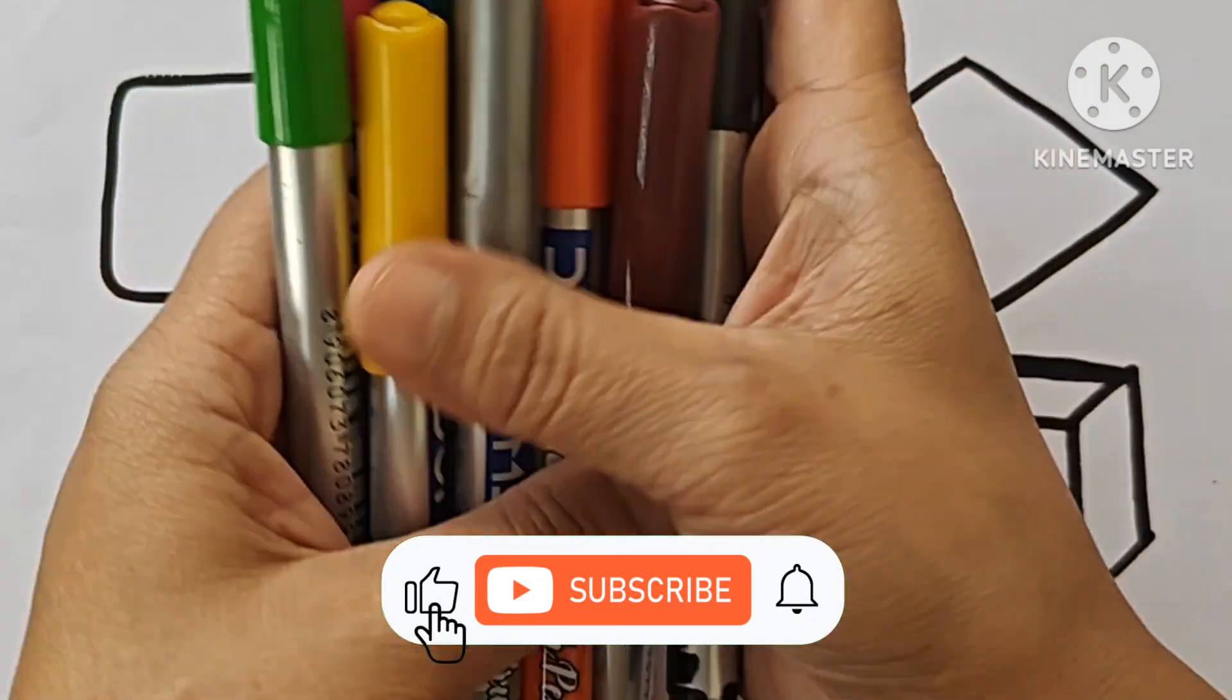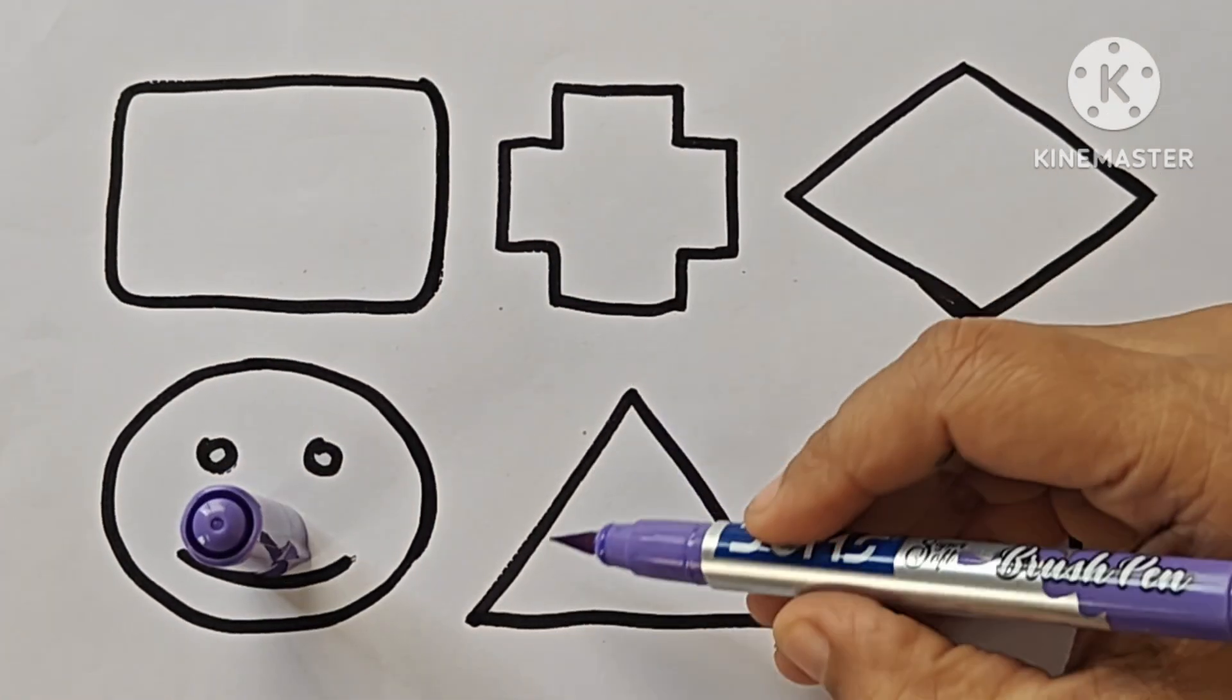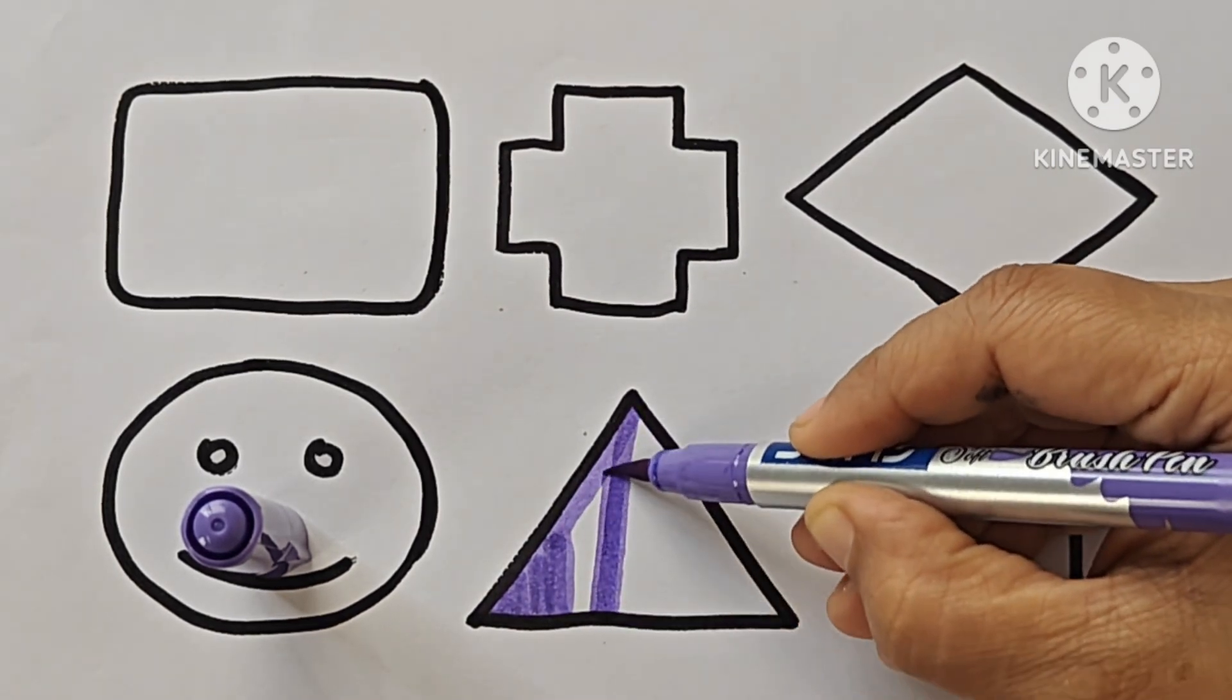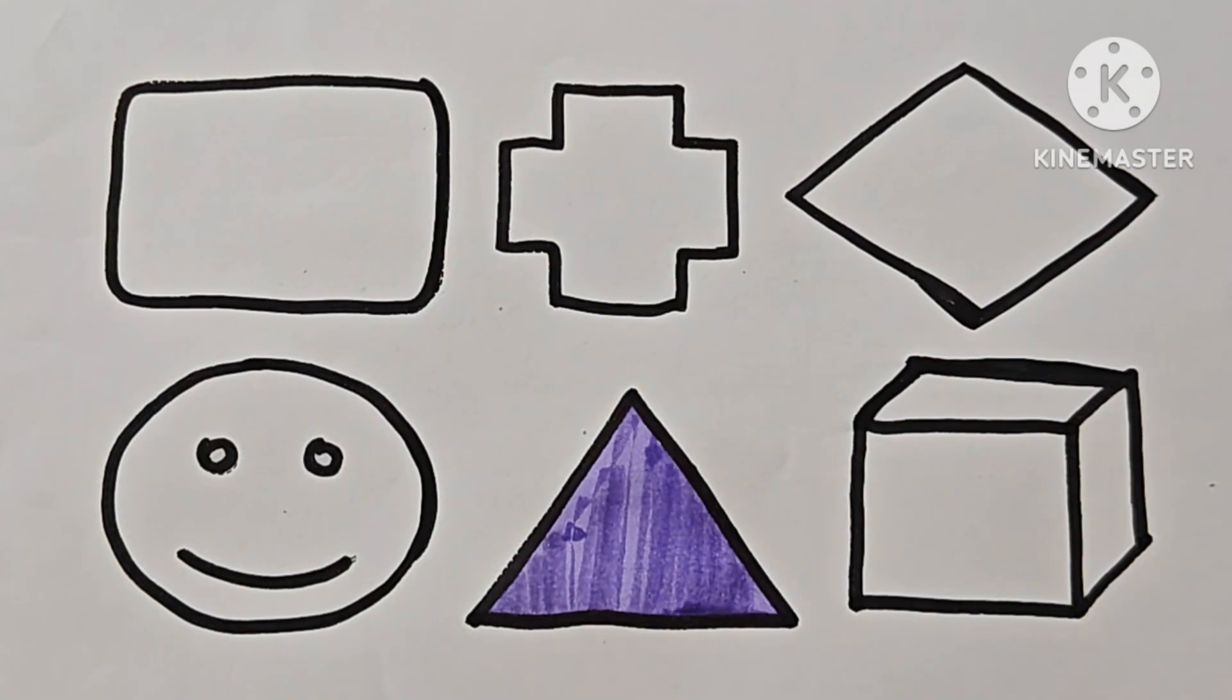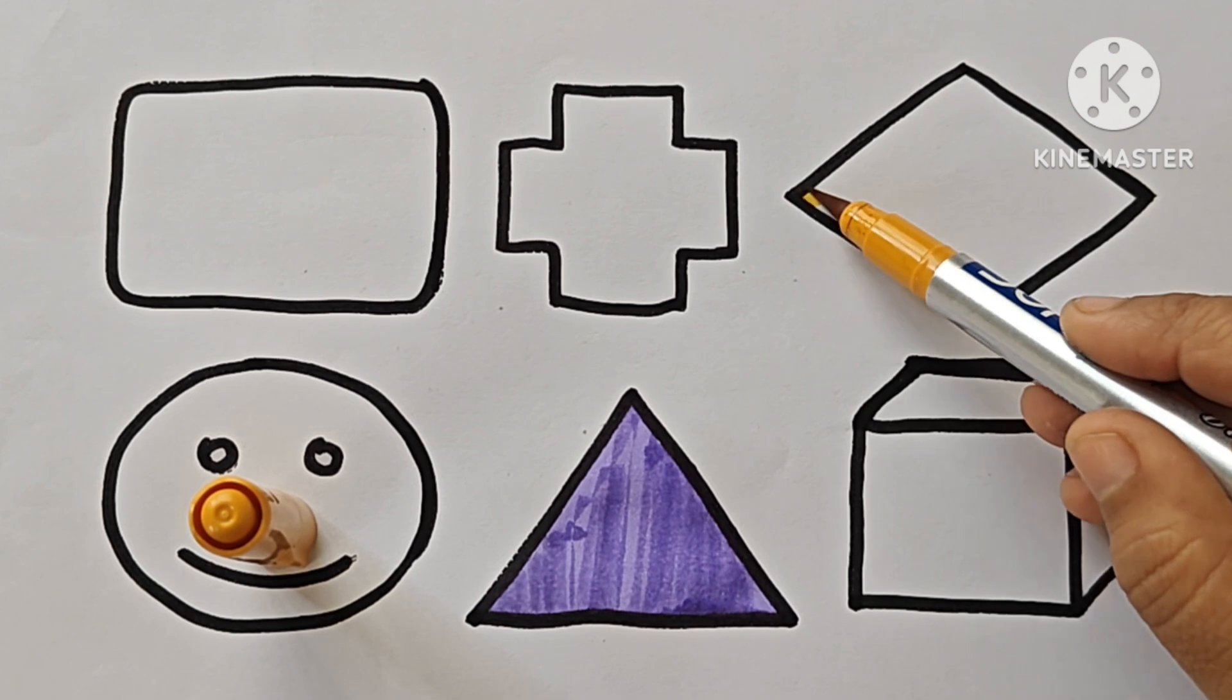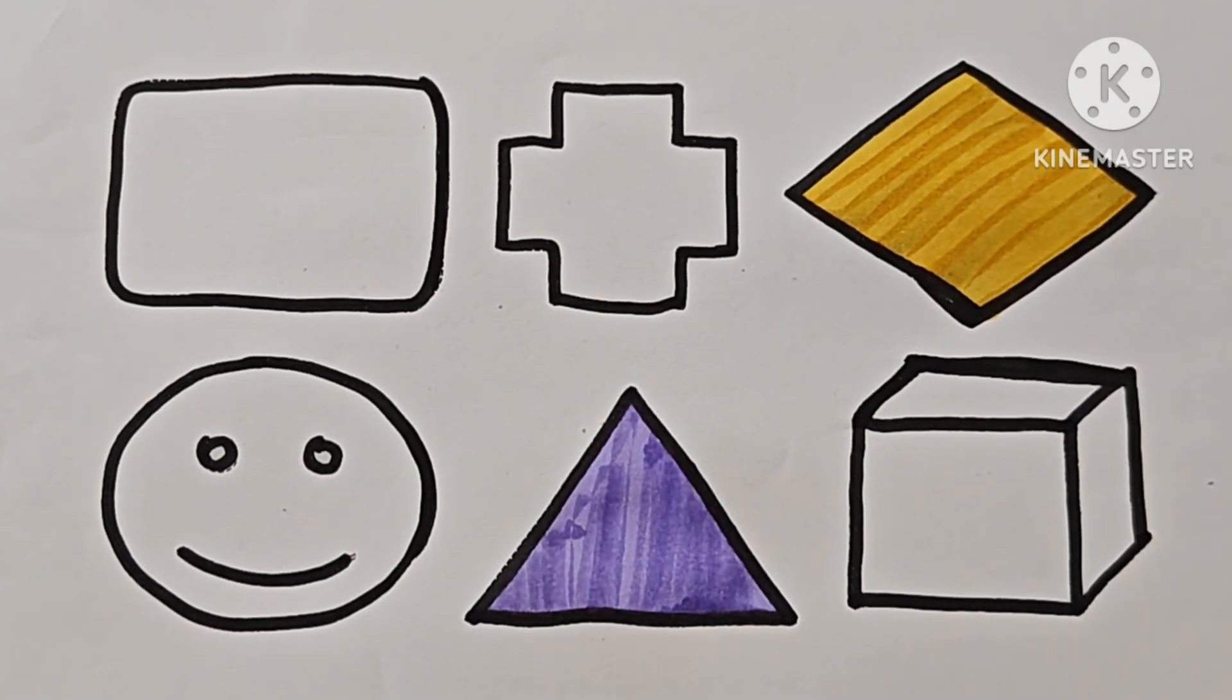Now we will color these shapes. Mustard yellow. Fluorescent yellow.